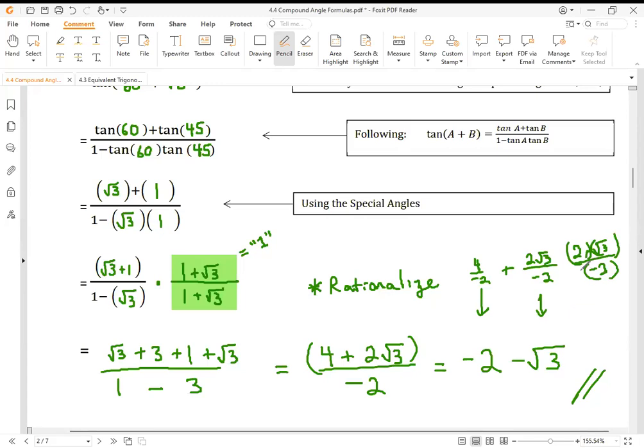My final answer is 4 plus 2 root 3 over negative 2. I see that I can simplify further. There. My final answer. Surprisingly, answers for tangent look cleaner than the answers for sine and cosine.